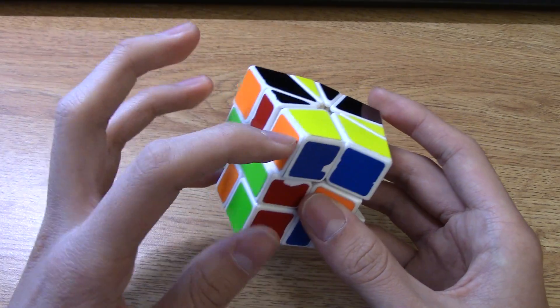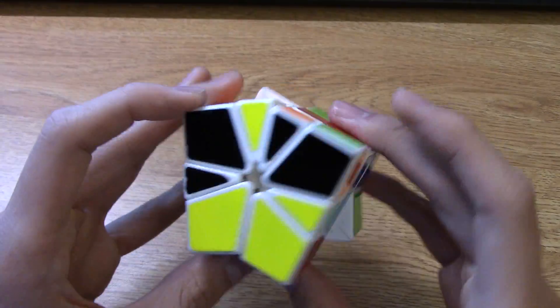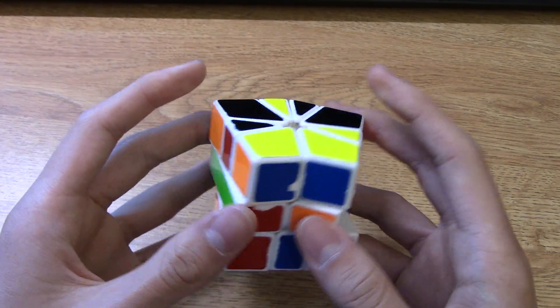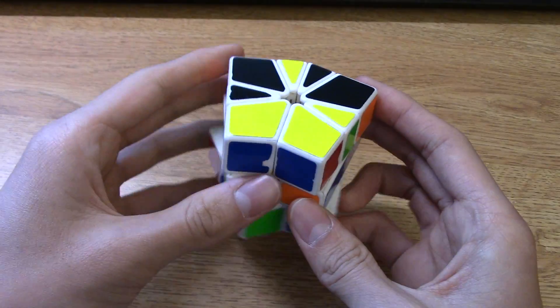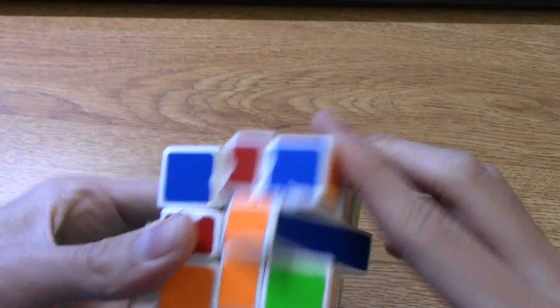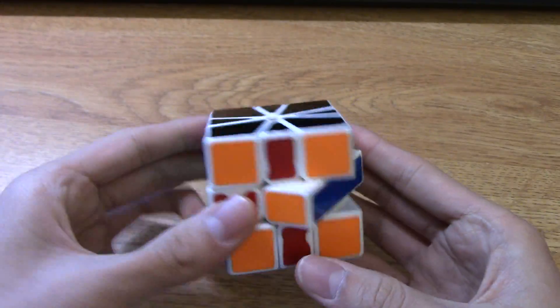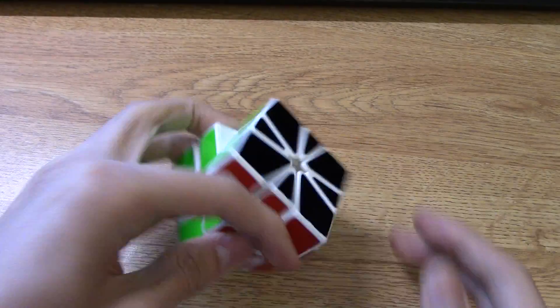And then for corners, 6, 7, 8, 9, 10. Yep, 10. So that's even parity. That means I can just slash it like that and just proceed onward.